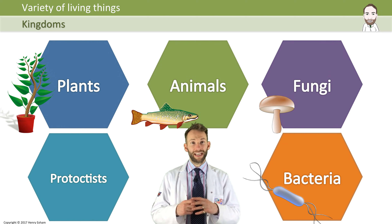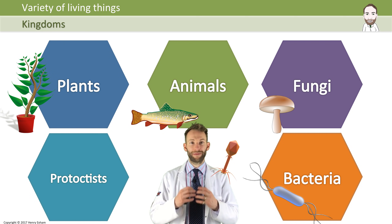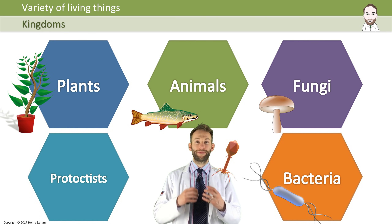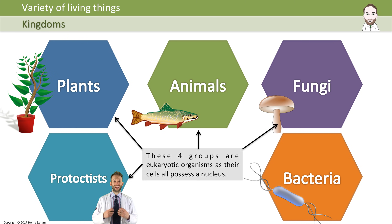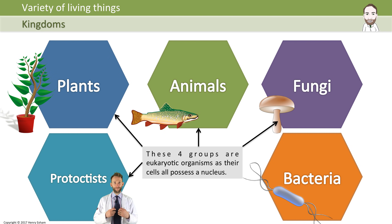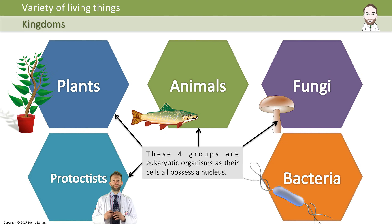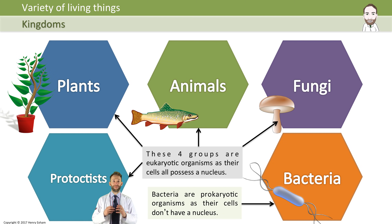We're also going to look at viruses, even though they are not technically living things and therefore we do not classify them into kingdoms. Plants, animals, fungi, and protoctists are all what we call eukaryotic organisms, meaning their cells have a nucleus. Bacteria are a very distinct separate group because their cells are fundamentally different — they are prokaryotic organisms because their cells do not have a nucleus.